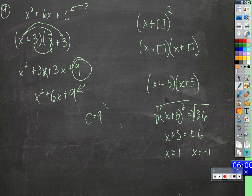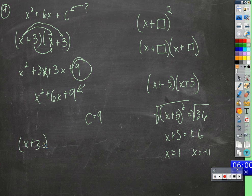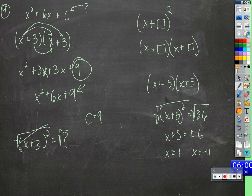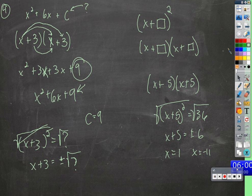Figuring out that number is key, because what we can do here is now we have a factor of x plus 3 times x plus 3. We can write that as x plus 3 squared, and if that were set equal to something, we can take the square root of both sides, cancel out the square — you can see how we're on our way to solving for x.